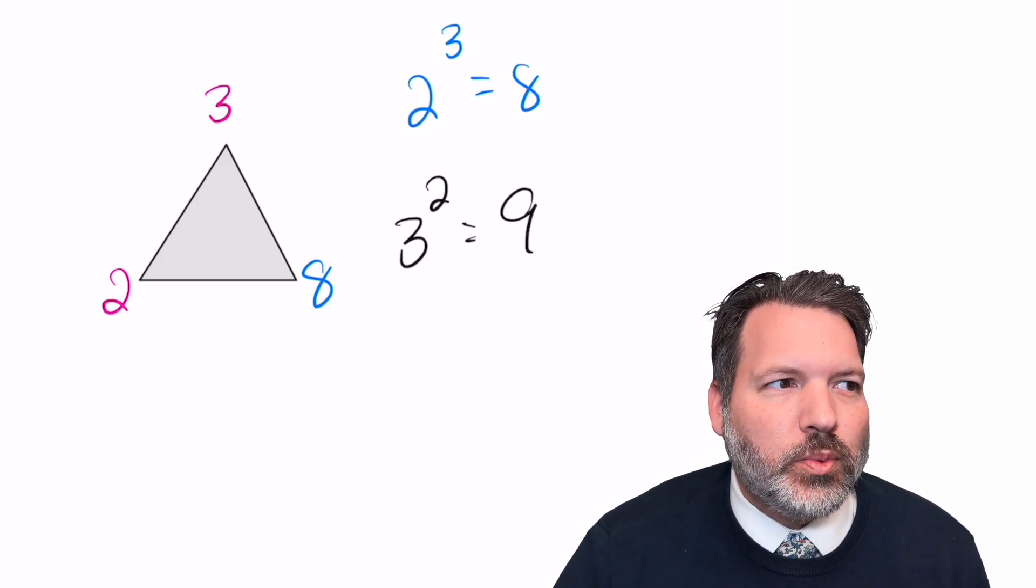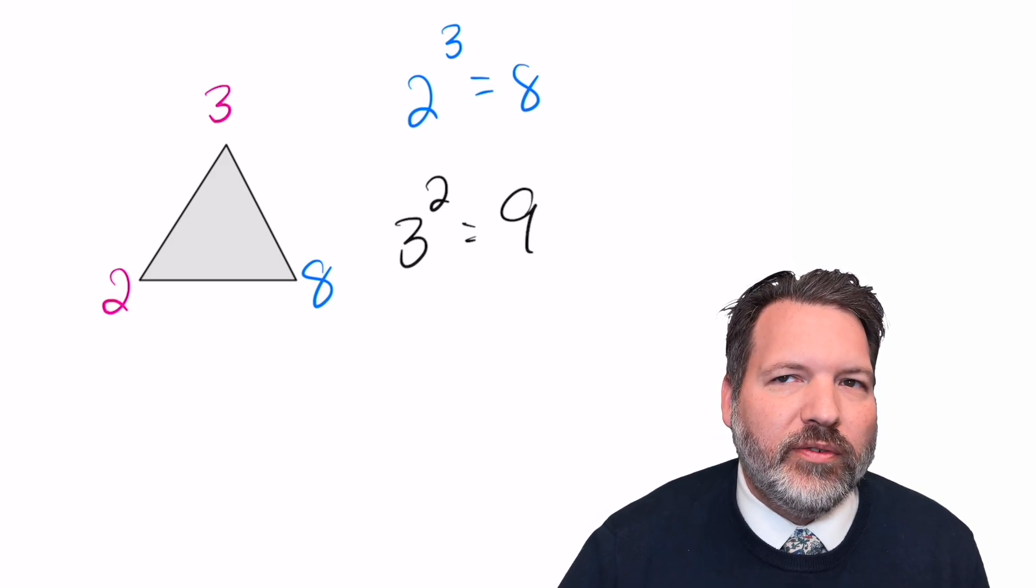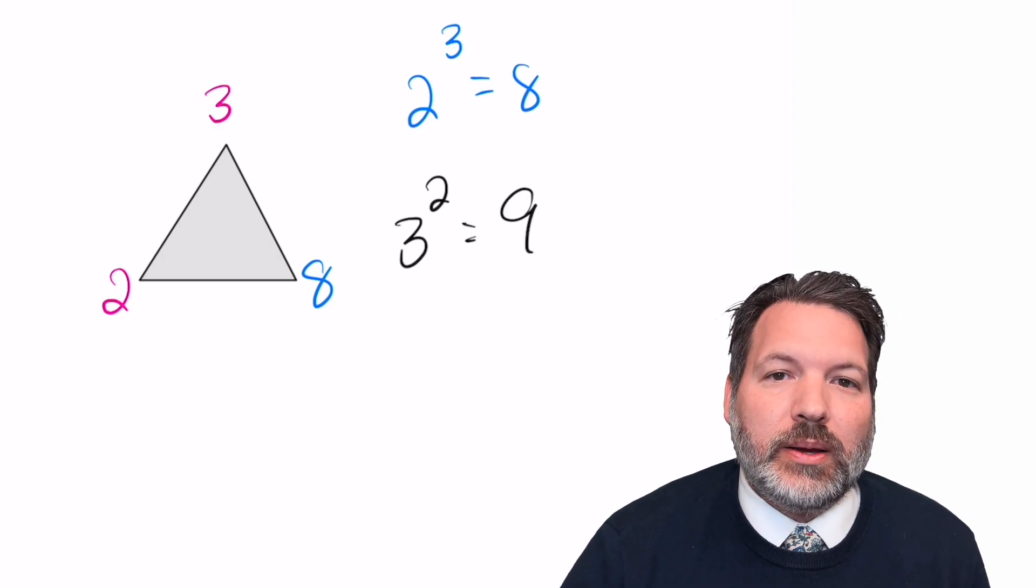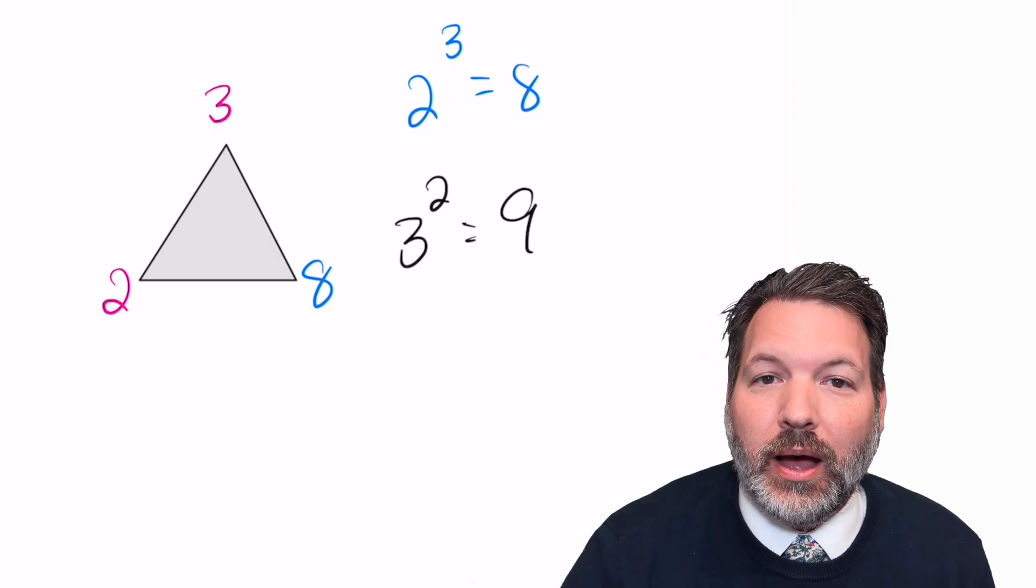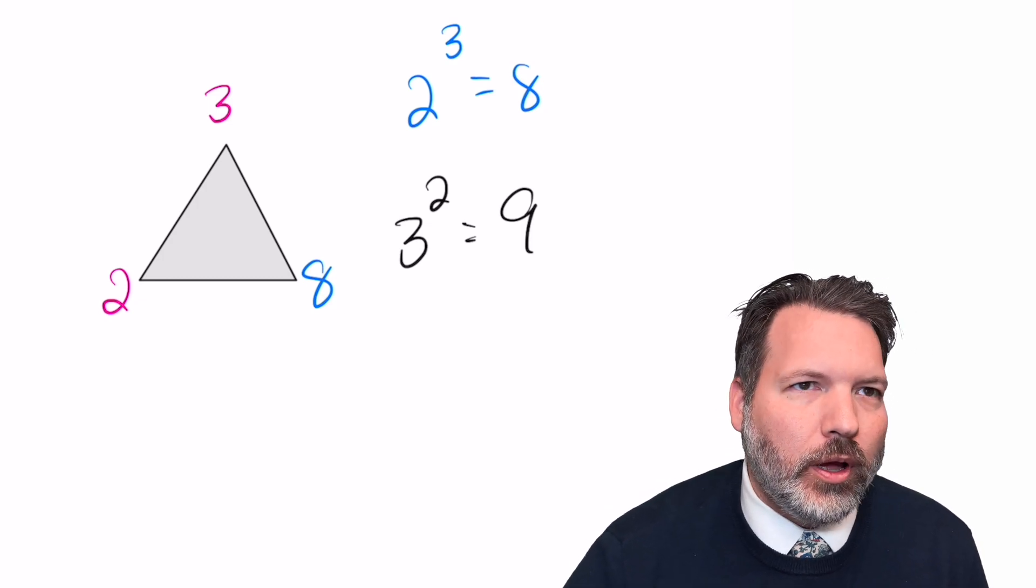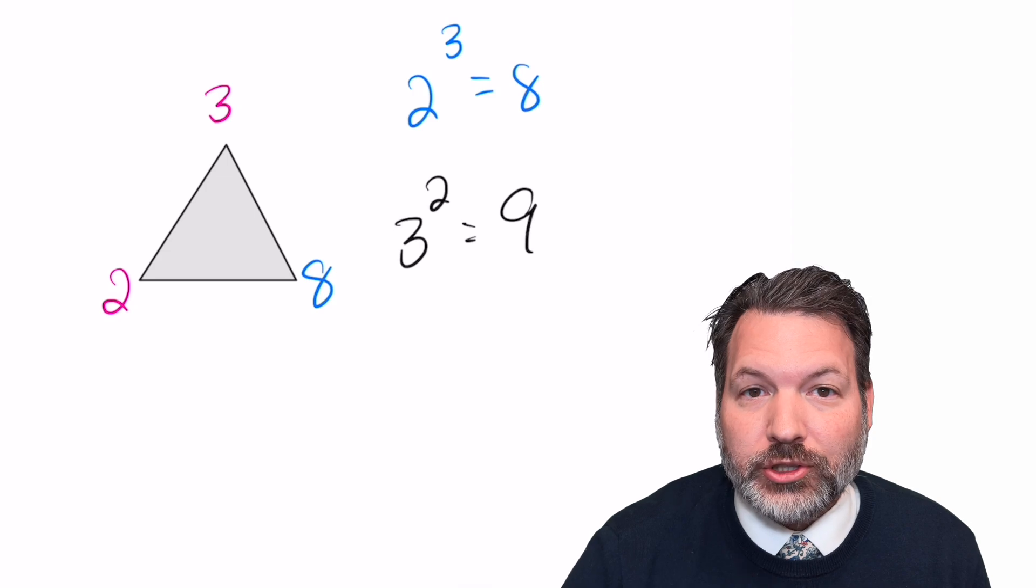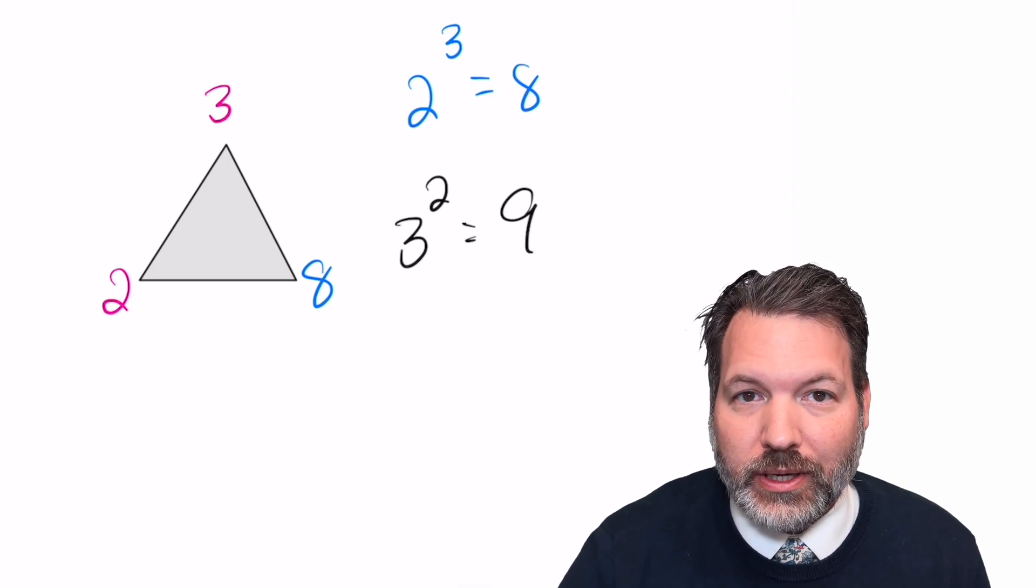I'll leave it as an exercise for the viewer to put that down in the comments. The reason we need both logarithms and roots is that they give us back different information, and we need different information because exponentiation is not commutative.